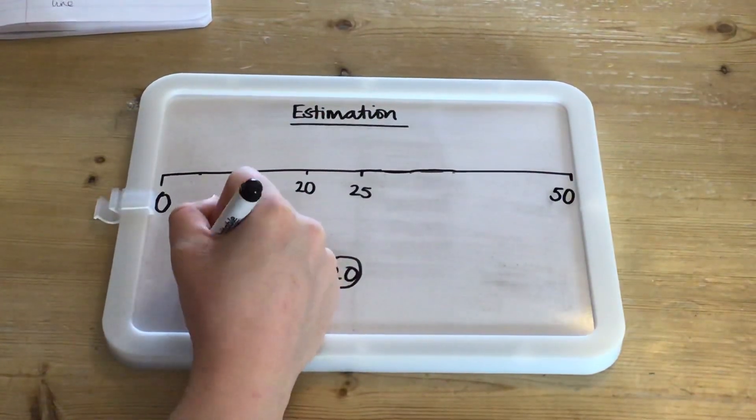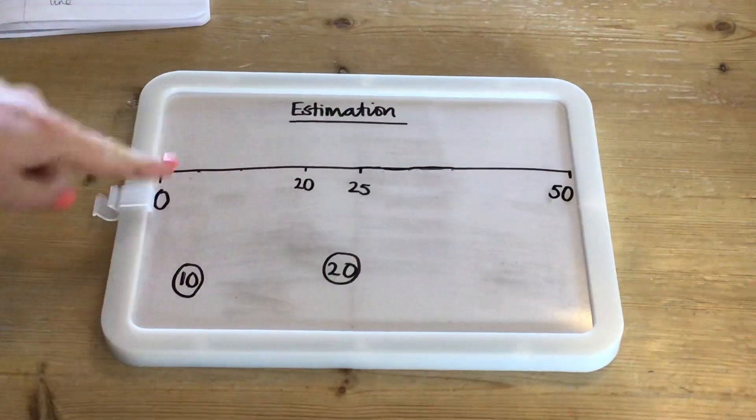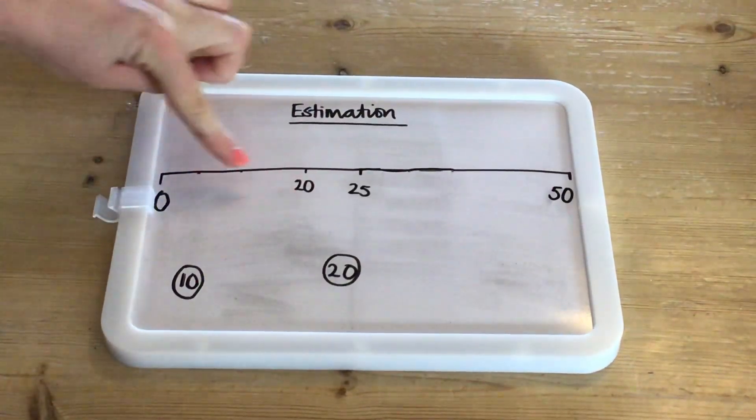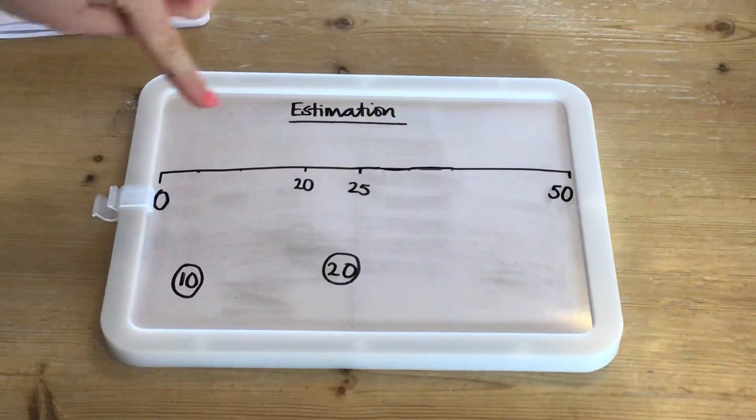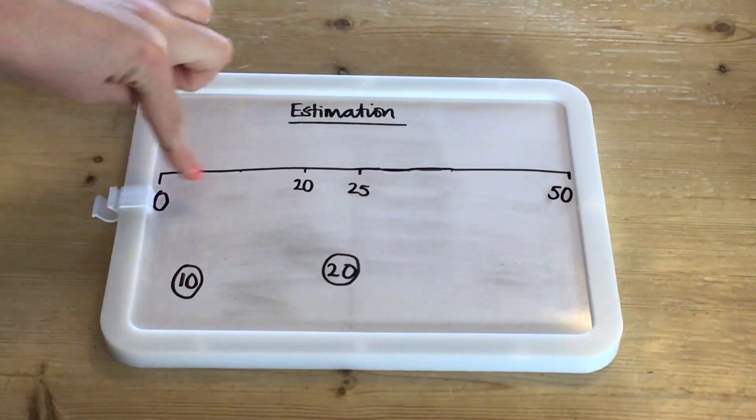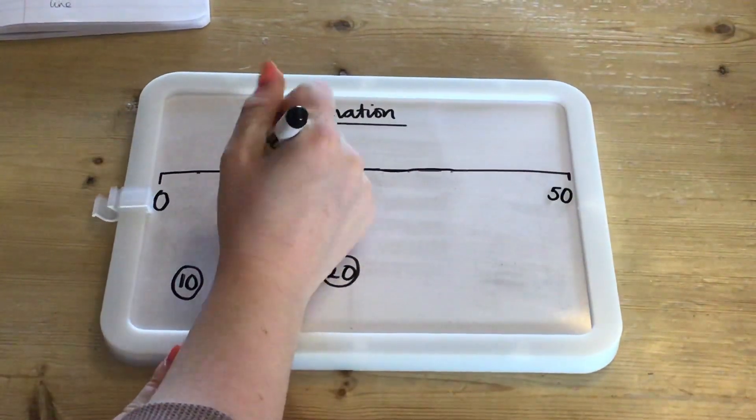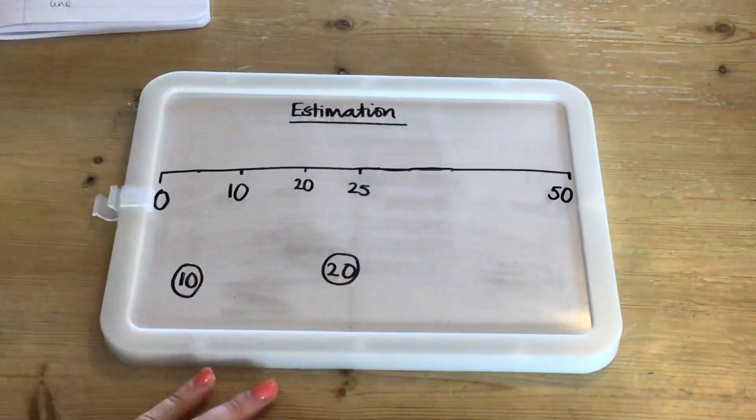If we're thinking about where 10 should go, we know that 10 is less than 20 so it should go in this portion of the number line. And looking at where 0 is and where 20 is, we know that 10 should go right in the middle of 0 and 20.